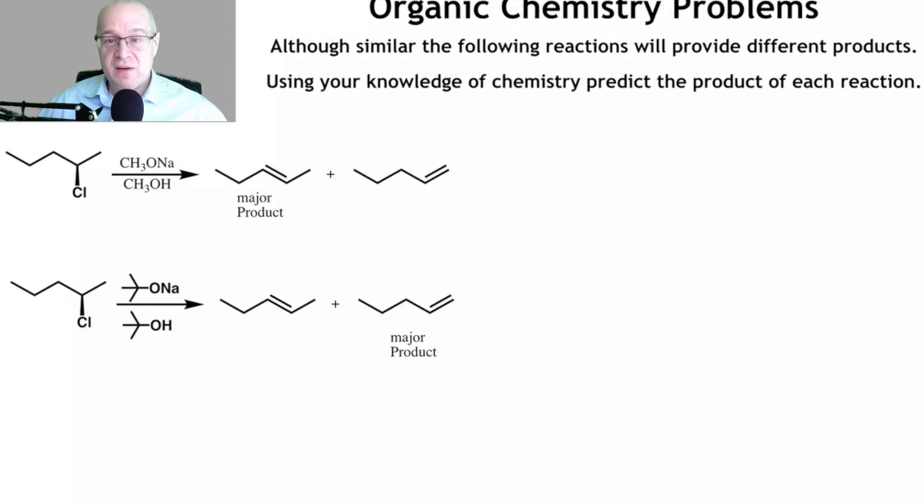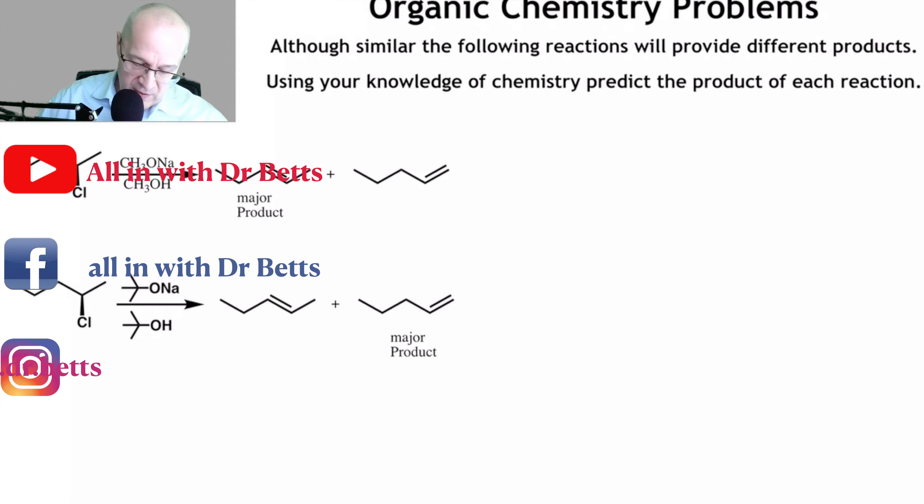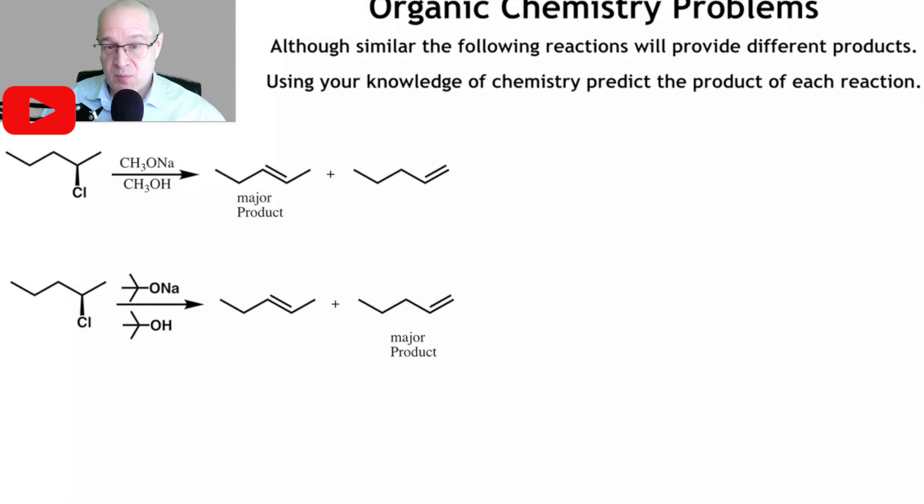This is a Zaitsev versus Hoffman problem, no doubt about it. We've got the same reaction occurring with two different types of bases. We have a small base and a large bulky base, so we're going to get different products.